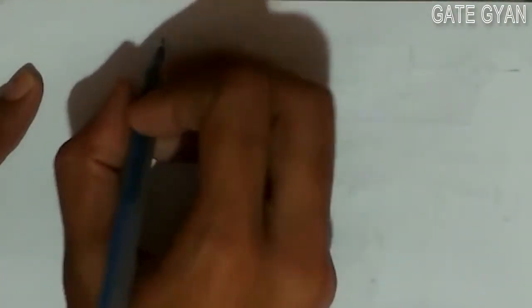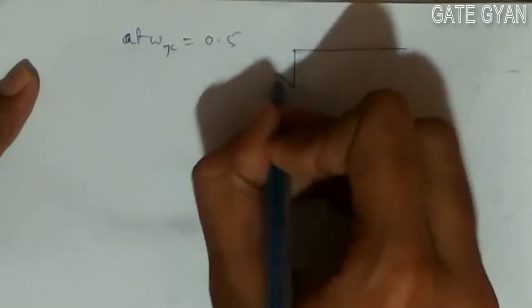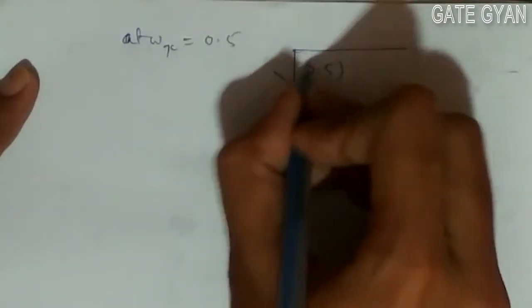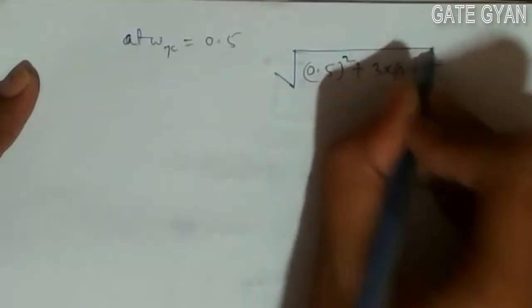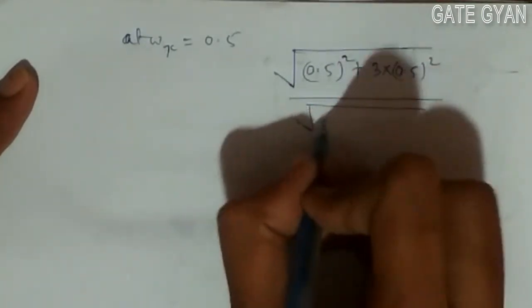At ωgc = 0.5, the transfer function value becomes: √[(0.5)² + (3×0.5)²] in both numerator and denominator.